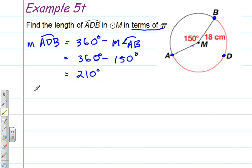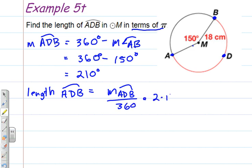So we'll apply that to the arc length theorem, which would tell us that the length of arc ADB is going to be equal to the measure of arc ADB over 360 times 2 times pi times the radius. Remember, we're going to leave this in terms of pi, so we're not going to put 3.14 in for that. The measure of arc ADB is 210 degrees over 360 degrees. And we're going to multiply that by 2 times the radius, which is 18 centimeters, times pi.